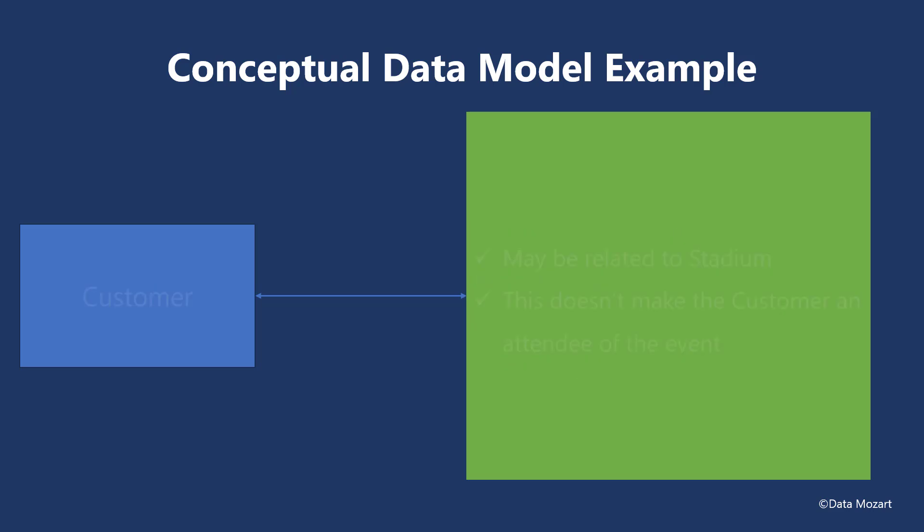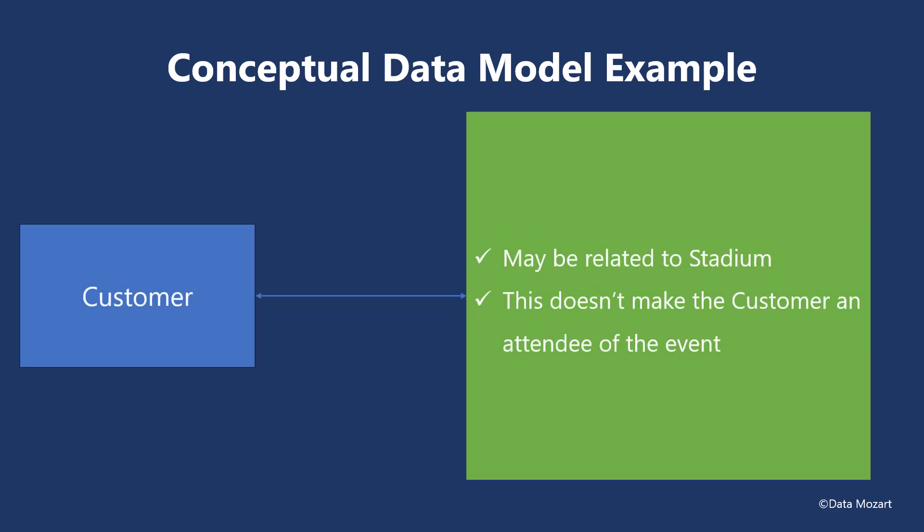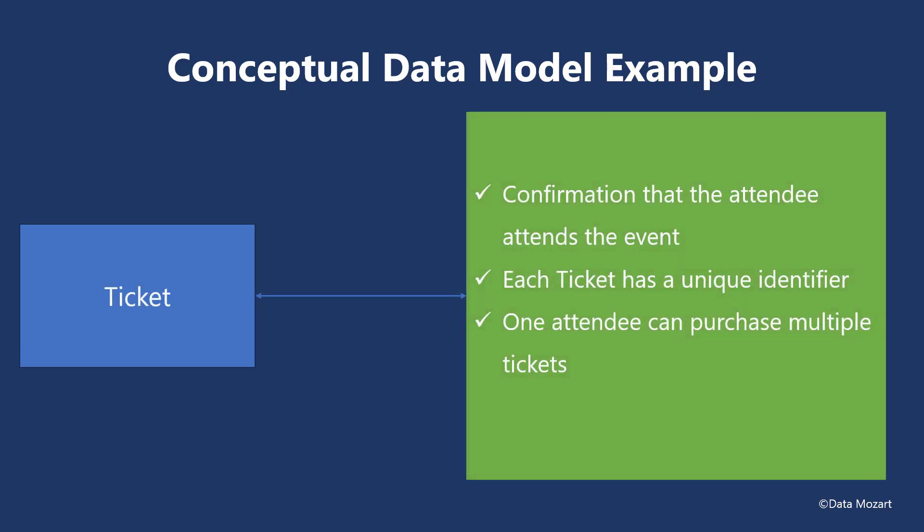Attendees can also be a customer of the stadium entity — in case they visit a stadium shop, for example. The key difference between the customer and attendee is that the customer doesn't necessarily need to attend a specific event at the stadium. The customer may have a relation to the stadium, like visiting a stadium museum or buying at a stadium fan shop, but that doesn't make them attendees of the event. Finally, a ticket is an entity that represents confirmation that the attendee will attend a specific event. Each ticket has a unique identifier, as it would be really awkward if two or more attendees got a ticket with the same number. Although the ticket is uniquely identified, one attendee can purchase multiple tickets.